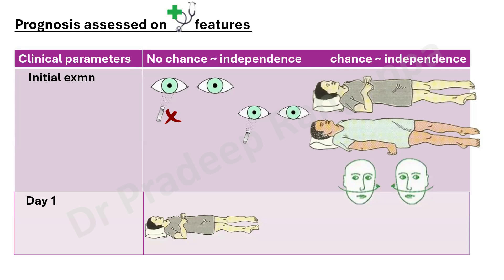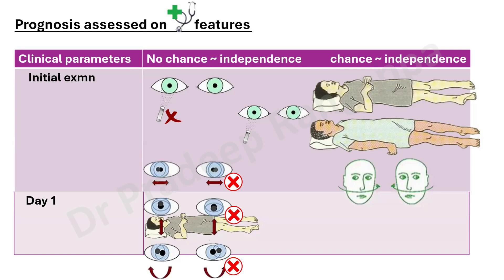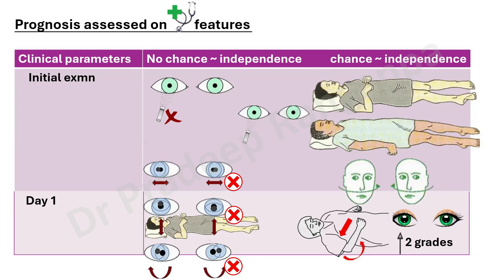On day one, if they have decorticate abnormal flexion with absolutely no eye movements — no lateral, upward, downward, or rotational movements with head movement — that indicates possibly poor prognosis and no chance of regaining independence. But on the contrary, if they have a normal flexor response and improvement in eye opening by two grades, these are indicators that there is hope. Some eye movement — upward, downward gaze, or rotational — may indicate hope, but absolutely no movement is a bad sign.